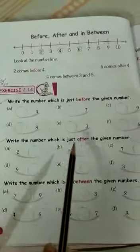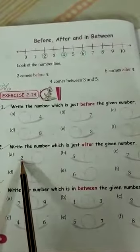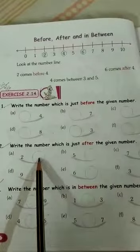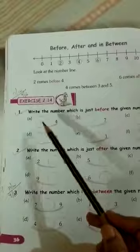Now, write the number which is just after the given number. After 2, here will be 3. After 5, 6, like this, you will complete 1 and 2 in your class work.